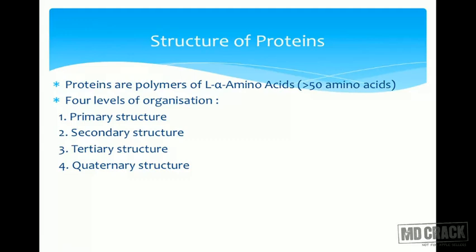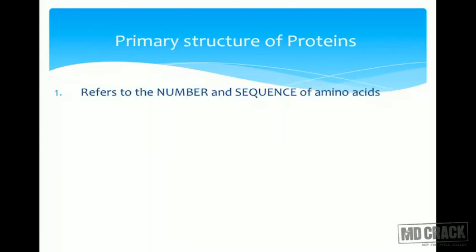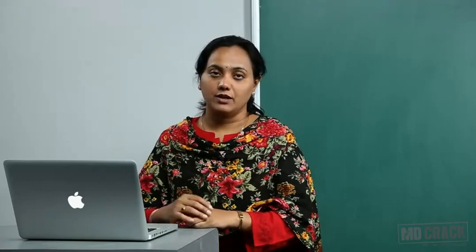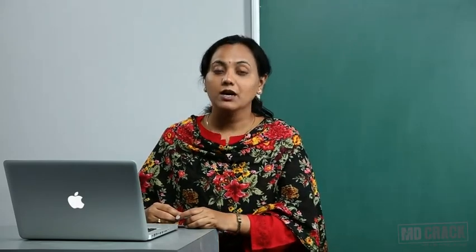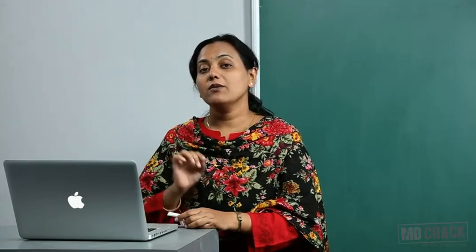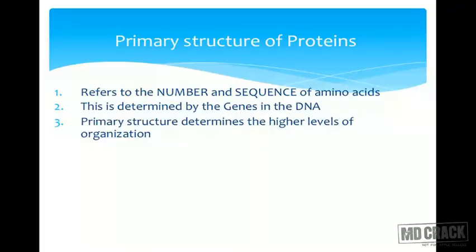The primary structure refers to the number and sequence of amino acids. A protein may contain 50 amino acids, another may contain 100 — the number varies. There may also be proteins with the same number of amino acids but a different sequence, and that is why they are different proteins. The sequence of amino acids is determined by the genes, or the genetic code. It is the primary structure which determines the higher levels of organization.